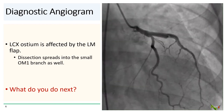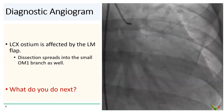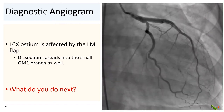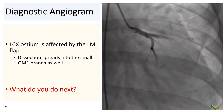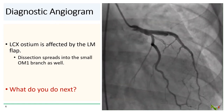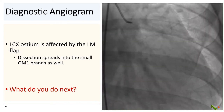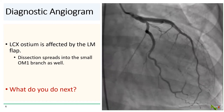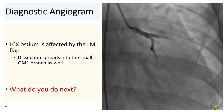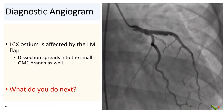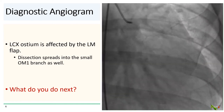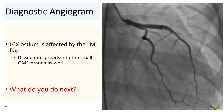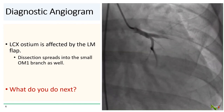The circumflex is affected as well. Its ostium appears partially compromised by the dissection flap in the left main. You can see that the dissection spreads all the way down into the small first OM branch as well. In this view, you can also see that the dissection in the LAD actually reaches up to the mid-LAD. But again, fortunately, there is still TIMI-3 flow in the circumflex.